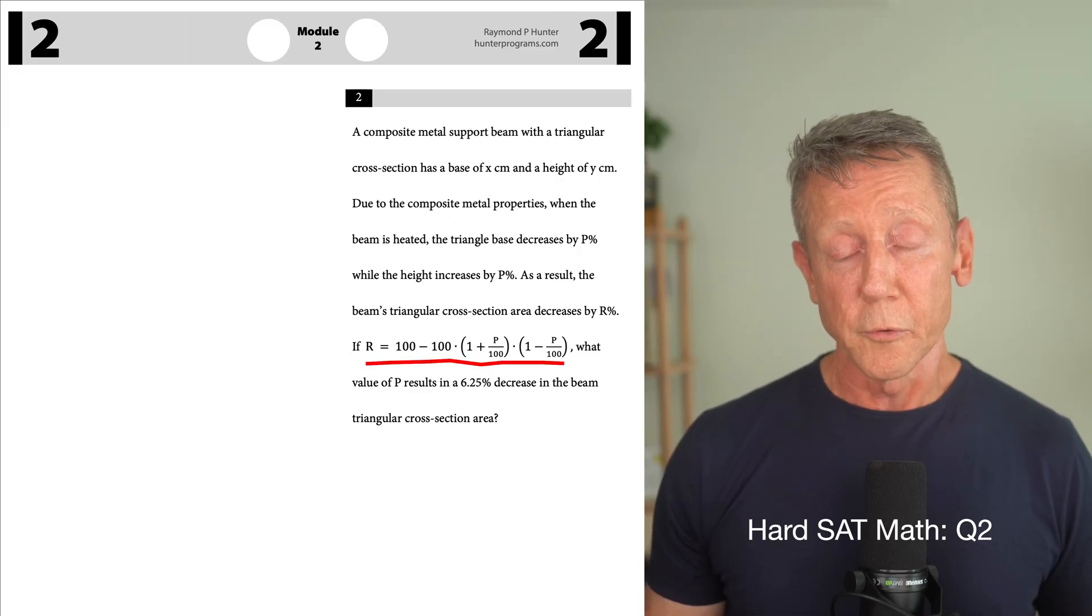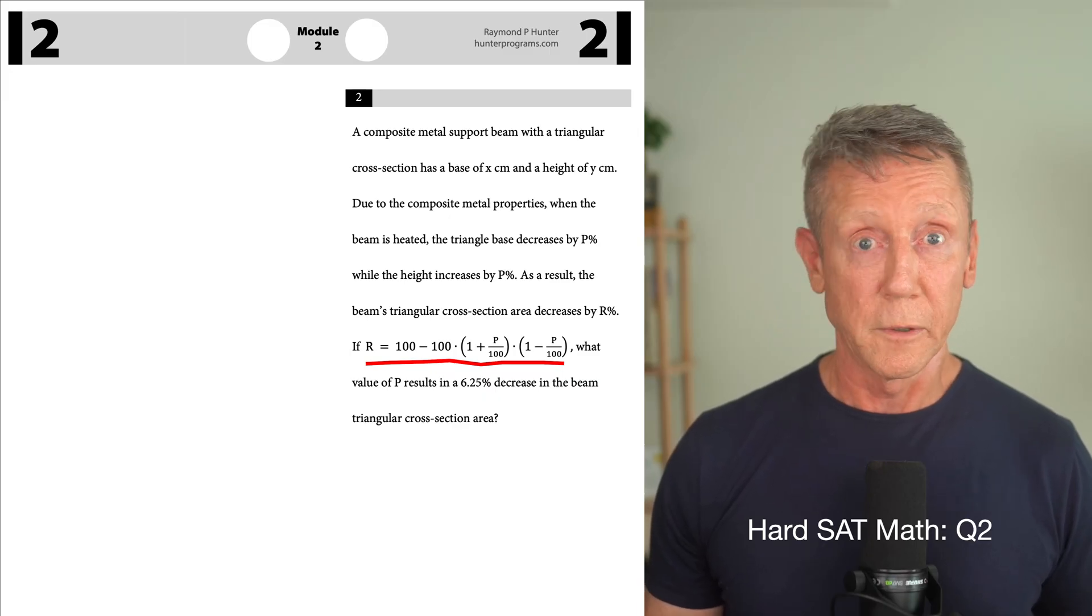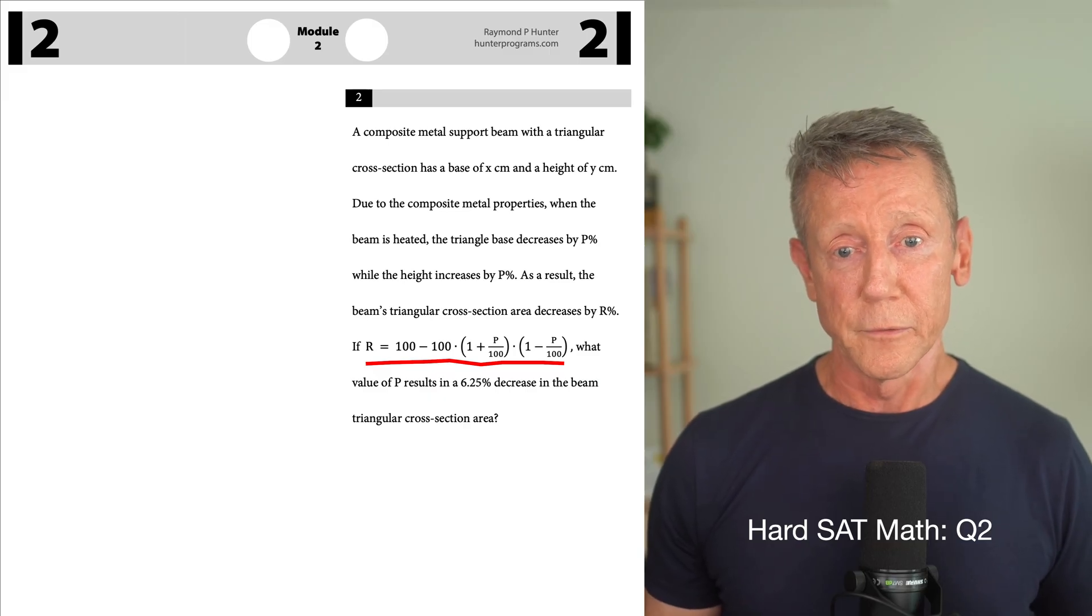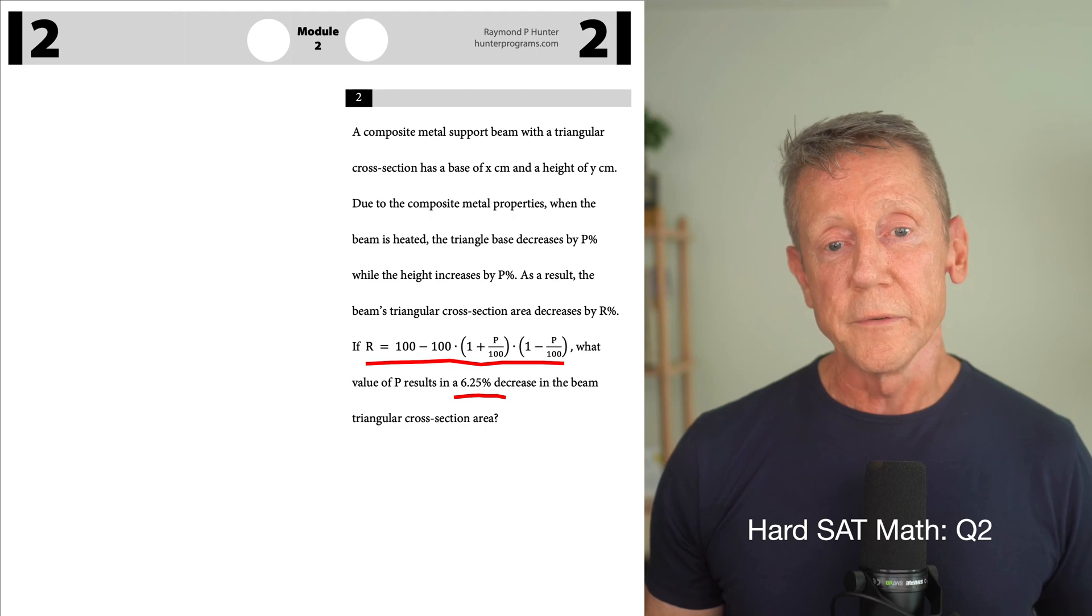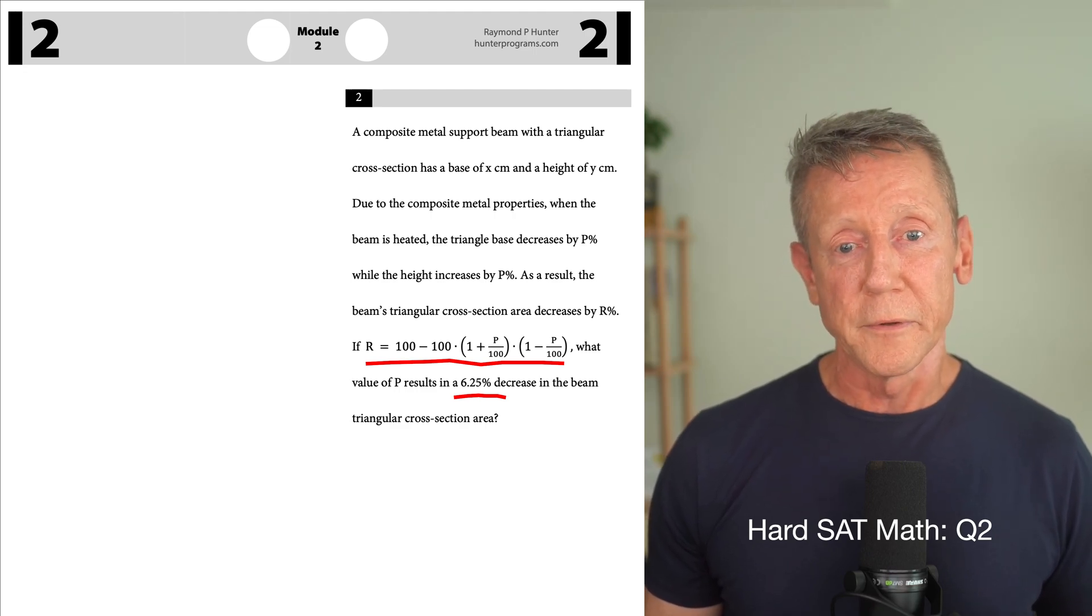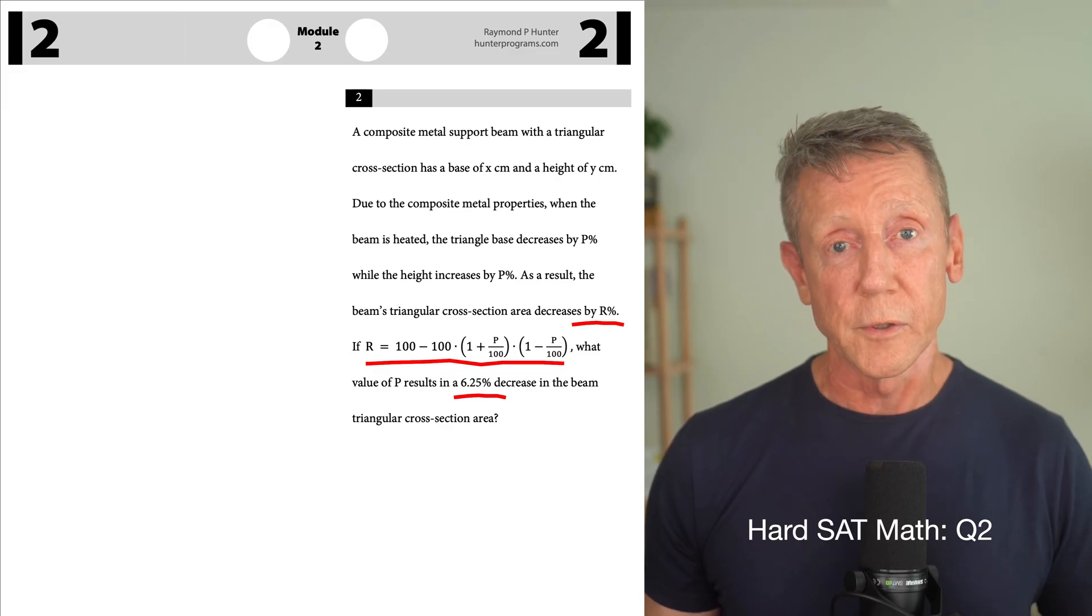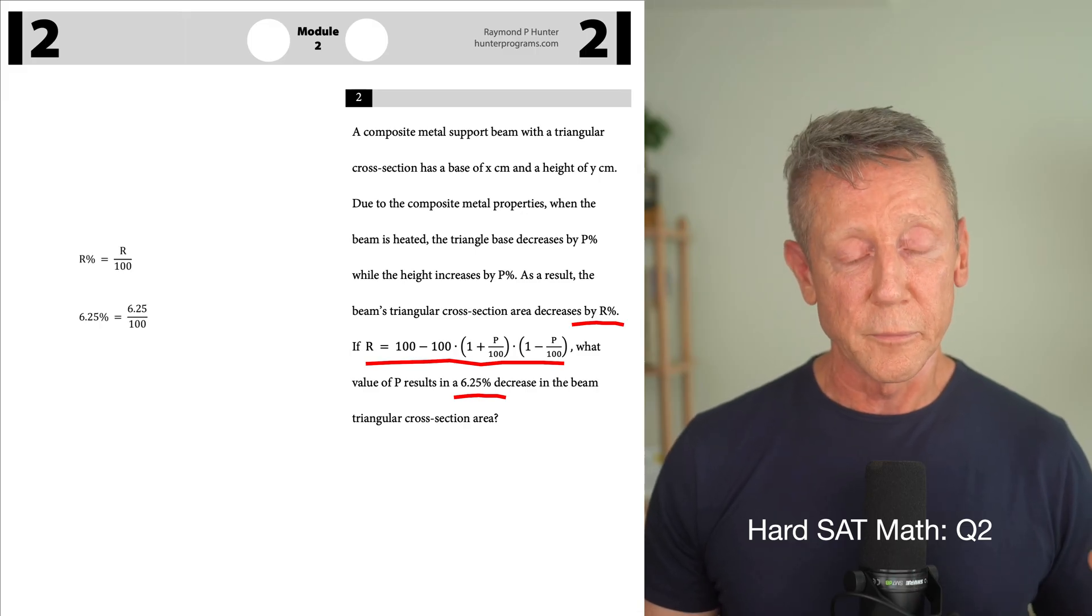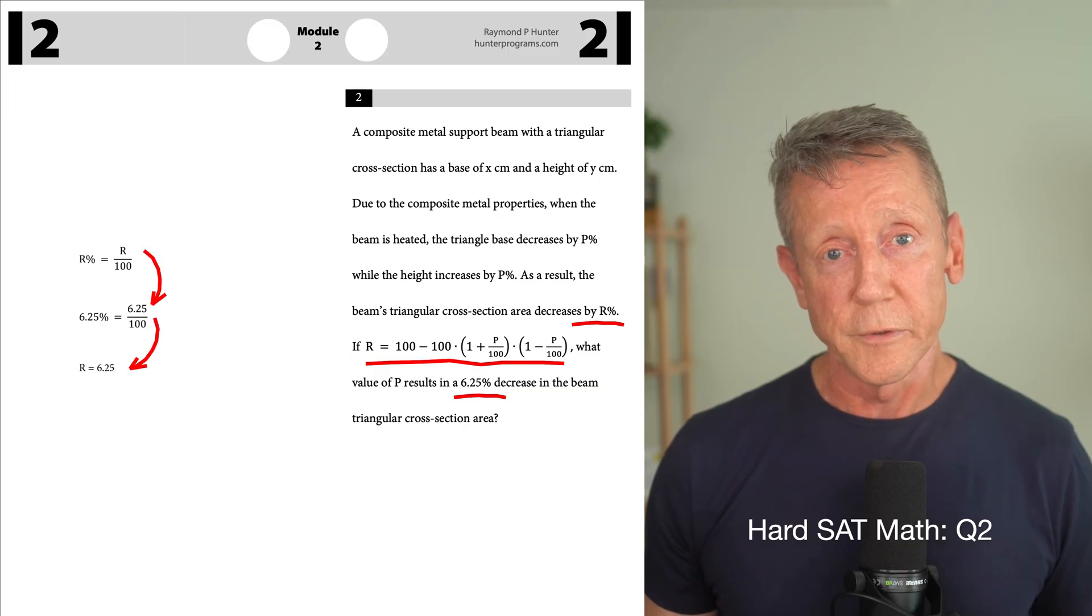All you have to do is dial in on the few parts of the problem that you need to get the job done. I usually start with the equation. And when I'm looking at the equation, I see an R and I see a P. And I see that we're trying to find P, so obviously we don't have that. So what's R? So I read down below and I see that the only number I got is 6.25%. And what is that? It's a decrease in the beam's triangular cross-section area. So R% is 6.25%. So I'm going to rewrite the 6.25% as 6.25 over 100 because I changed it into a number. And then the R is 6.25.